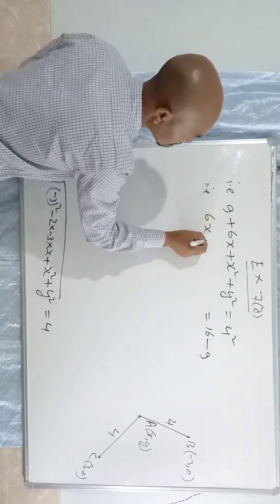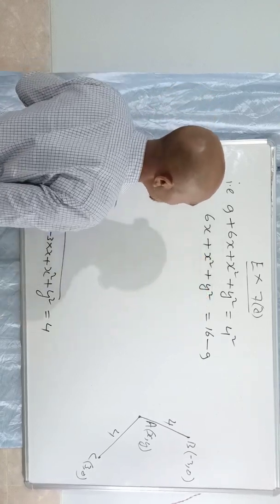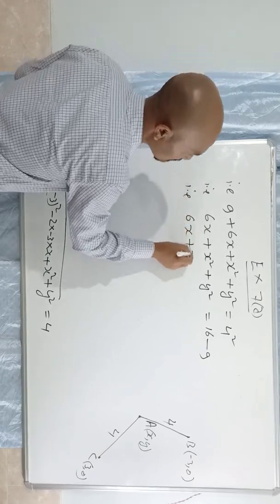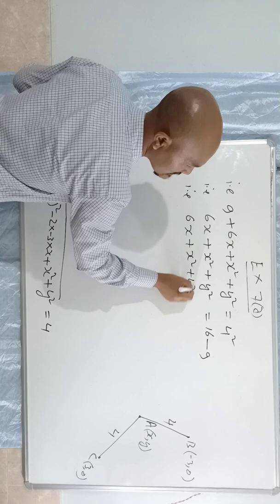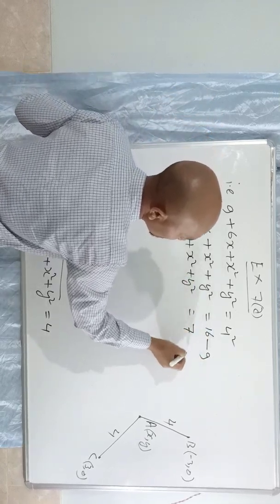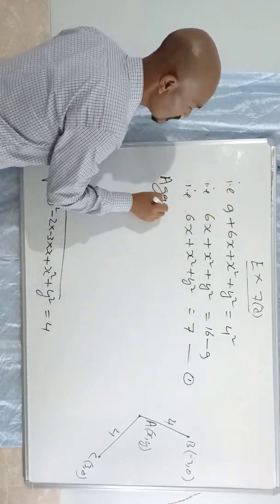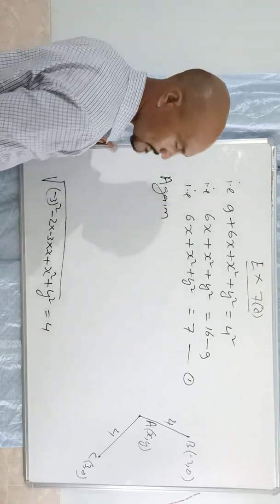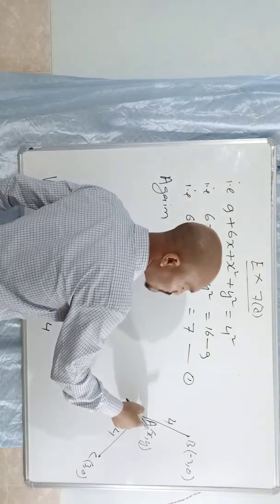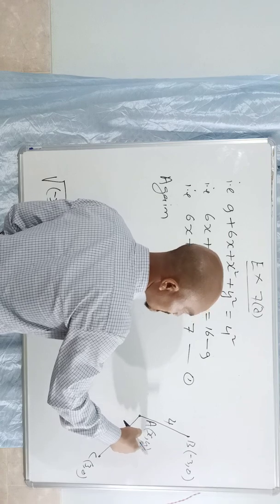So we have 6x plus x squared plus y squared. And then 16 minus 9 — this gives us equation 1 for x and y.